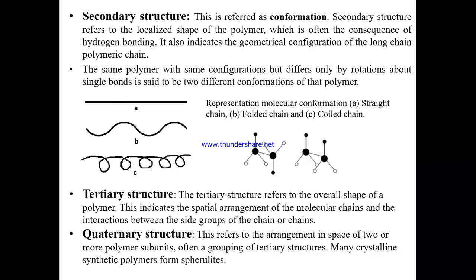The secondary structure, called molecular conformation, refers to the localized shape of the polymer, which is often a consequence of hydrogen bonding. The molecule may be a straight chain, folded chain, or coil configuration. The same polymer with the same configuration, but differing only by rotation about a single bond, represents two different conformations of the polymer.